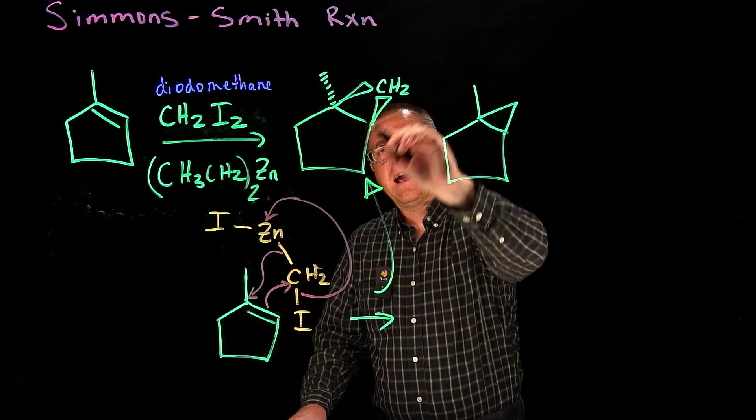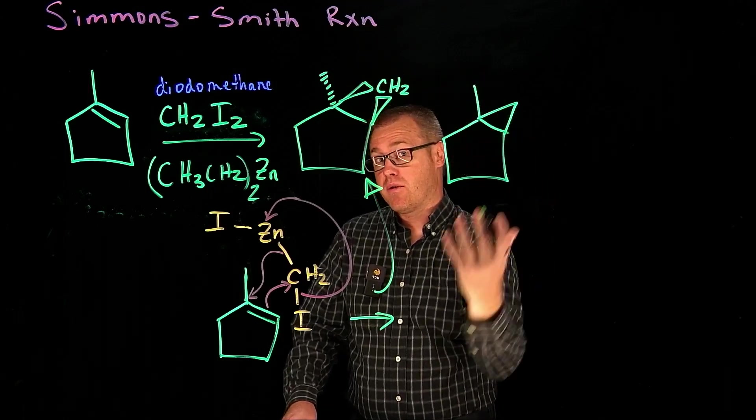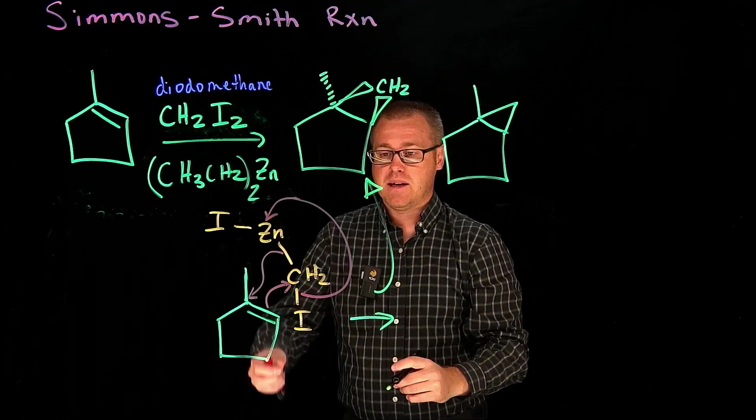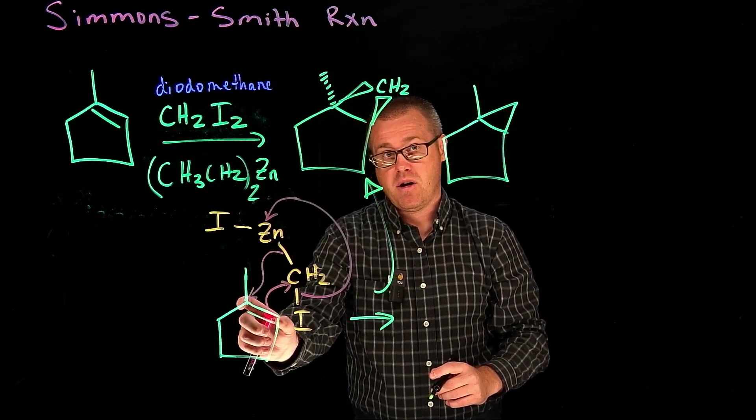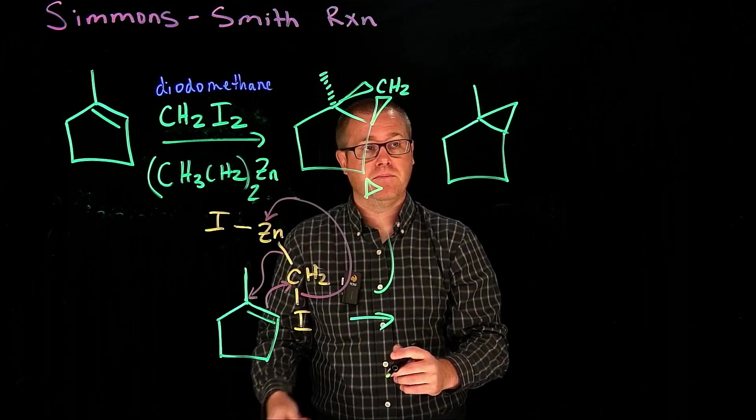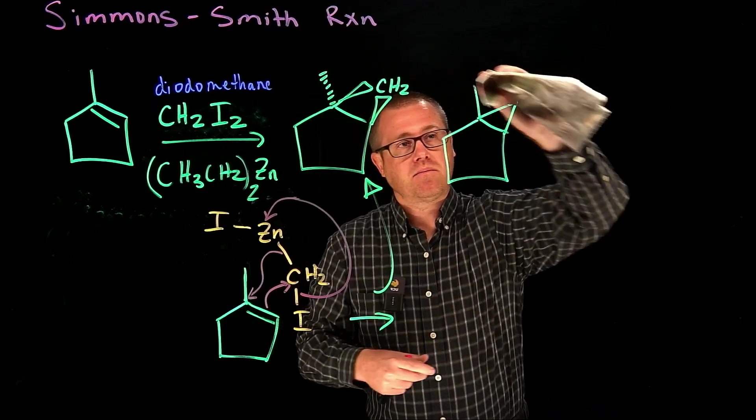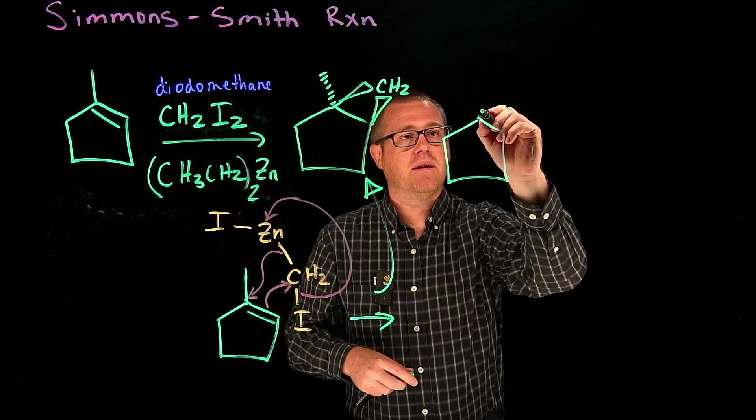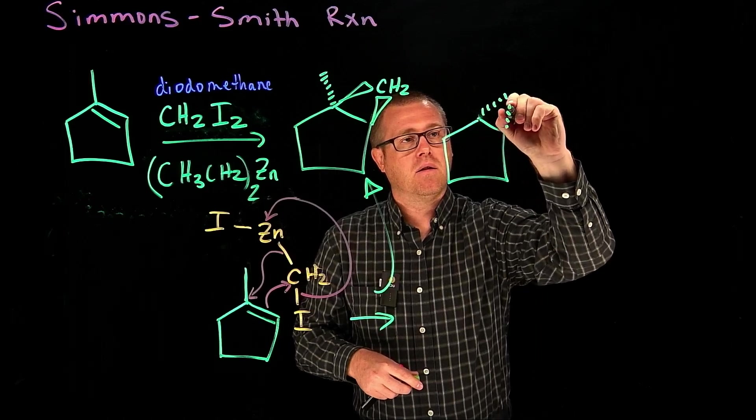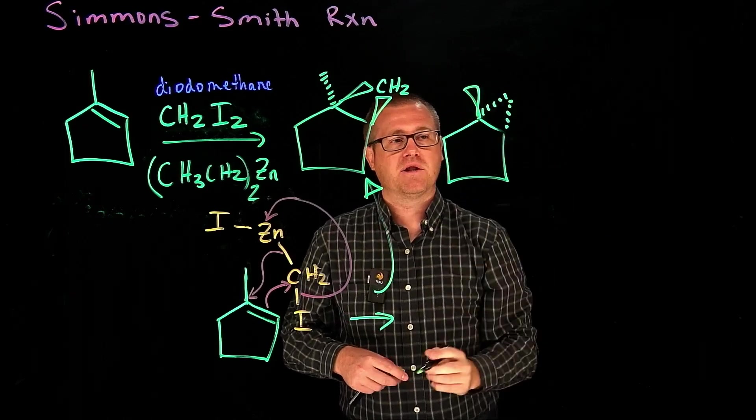You can see that we're adding from a top face or from underneath. It doesn't matter because the zinc species can approach that planar piece of that molecule from either face. So what do I mean by that? It could have very well have approached from underneath, so it would have looked like this. And then we would have a wedged methyl like that.